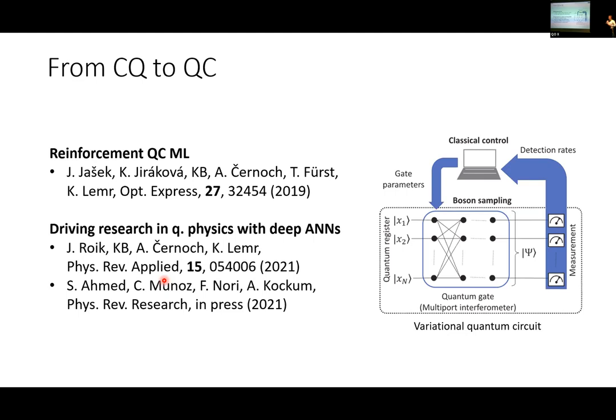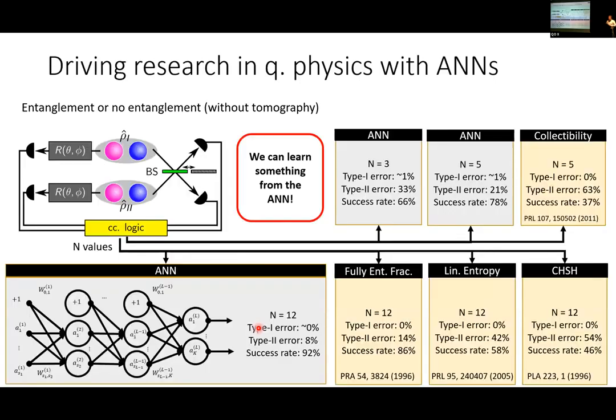How to go from CQ to QC machine learning? We can use other ideas for machine learning like optimal control for quantum setups, but we can also apply machine learning to physical research. For example, if you have a quantum relay and want to know if there is entanglement, you can perform a single projection of this beam splitter and some local measurements.